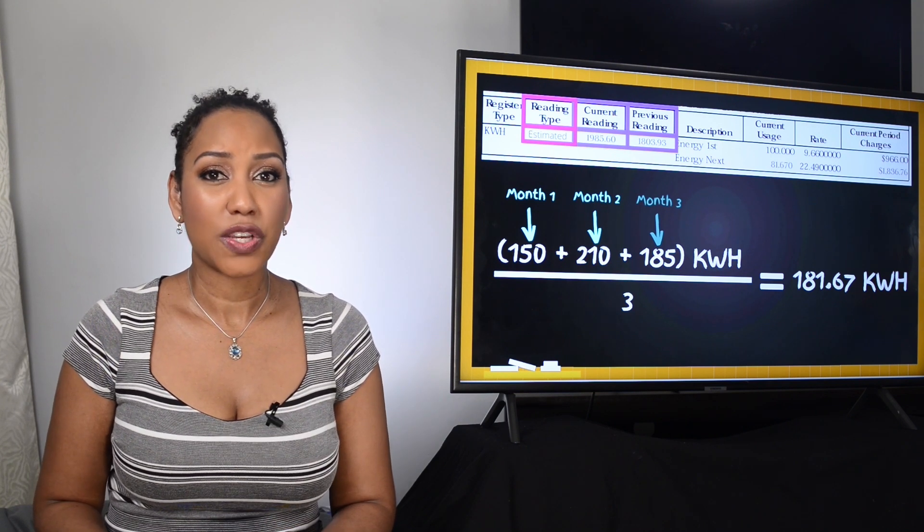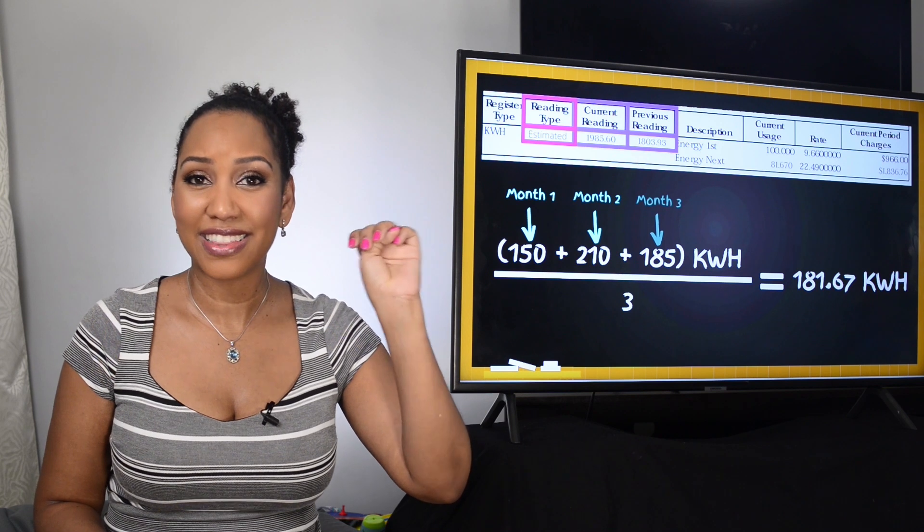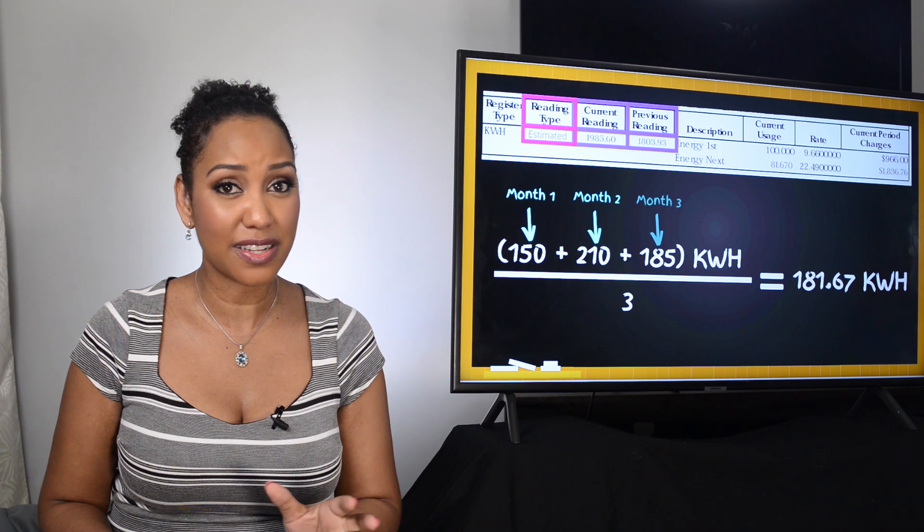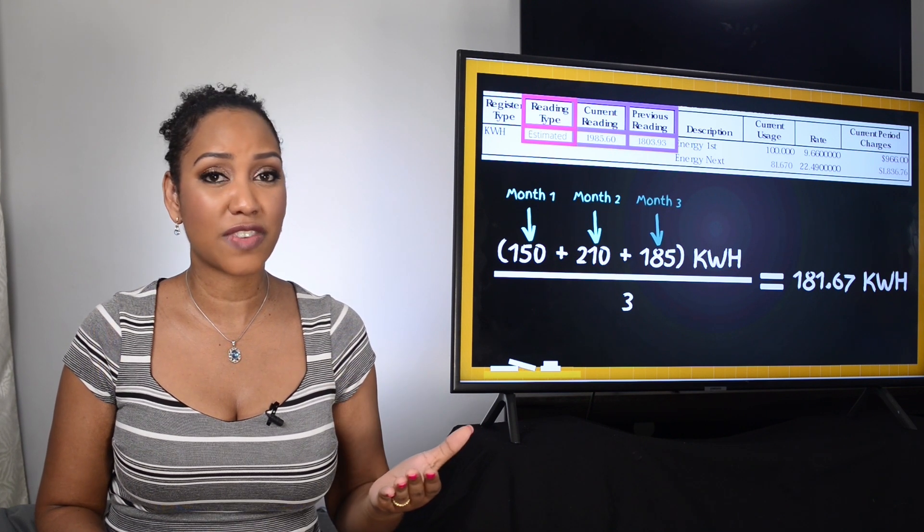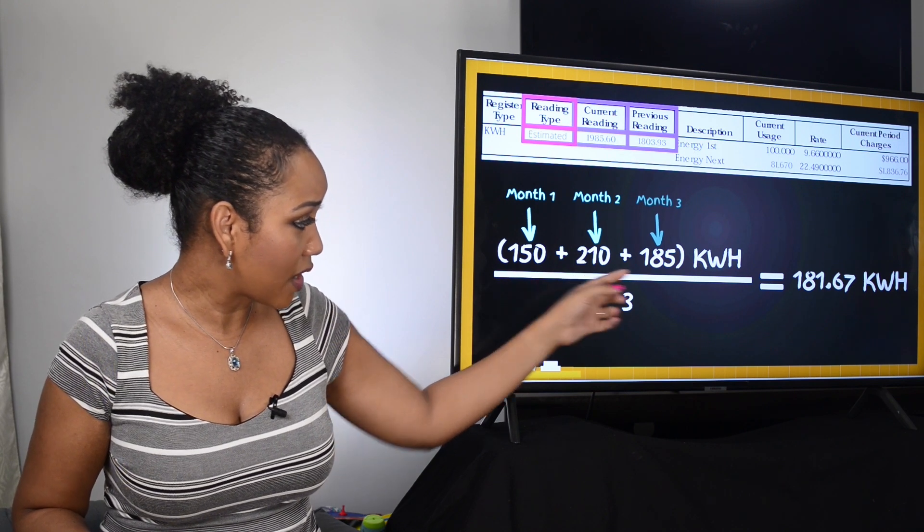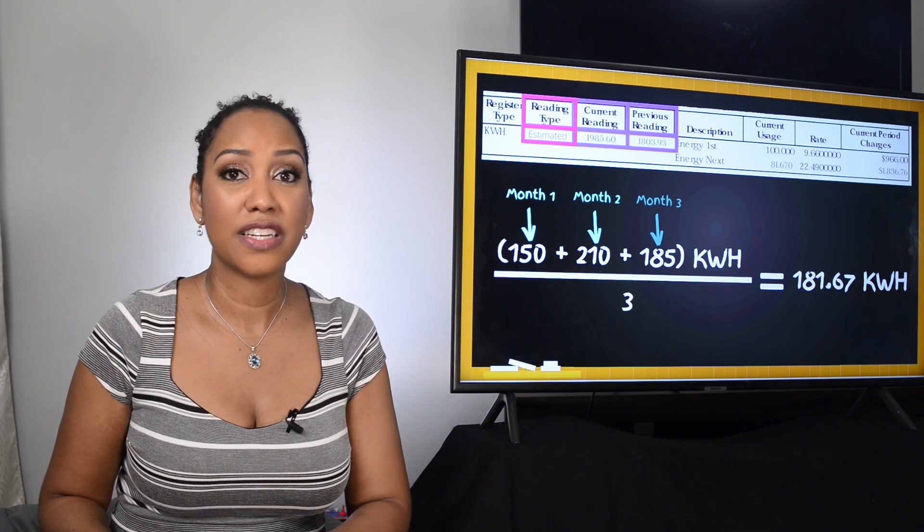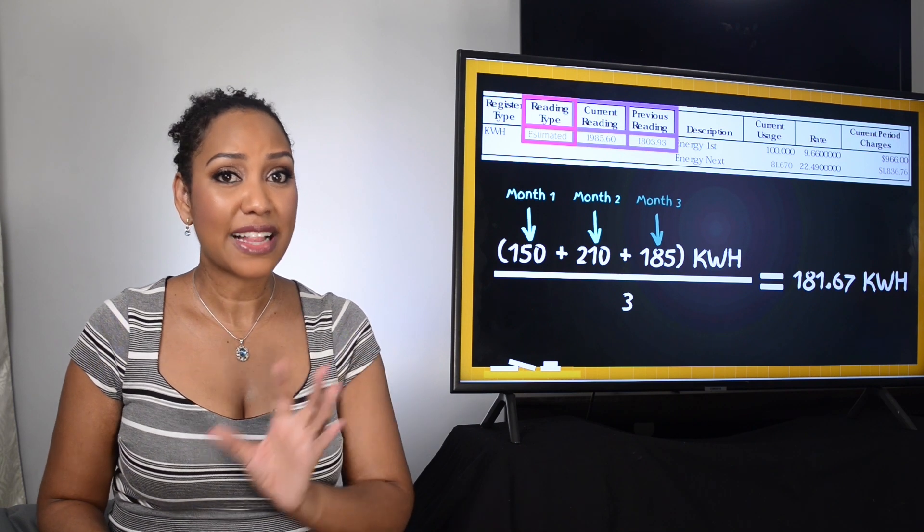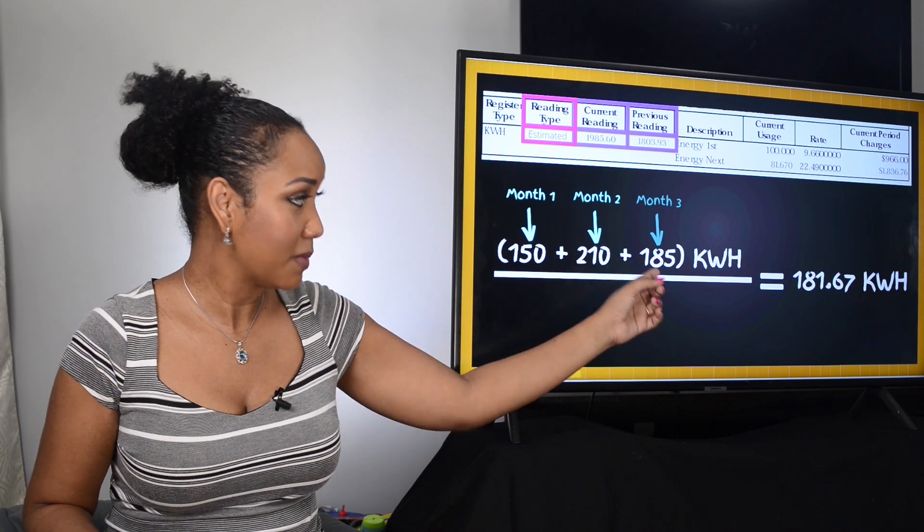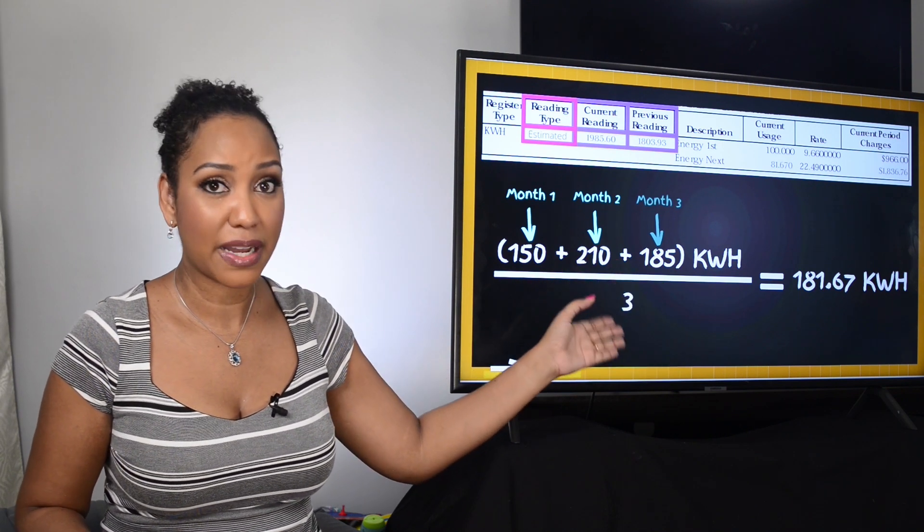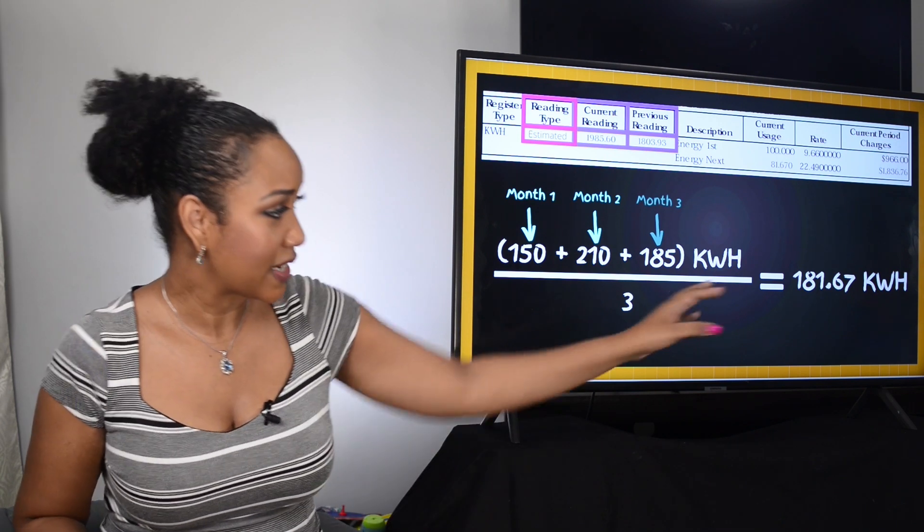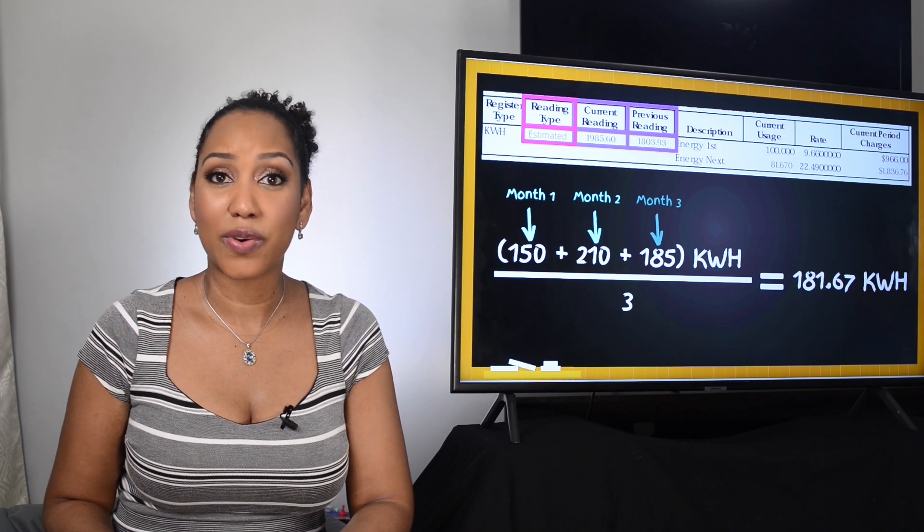So to calculate the estimate you'll need your last three light bills. Look at your energy usage for the previous three months. So for this customer say their energy readings for the past three months were 150 kilowatt hours, 210 kilowatt hours, and 185 kilowatt hours. Then to calculate the estimate for this bill would be 150 plus 210 plus 185 divided by three. The estimated energy usage for that bill would then be 181.67 kilowatt hours.